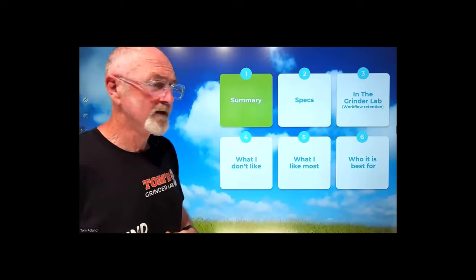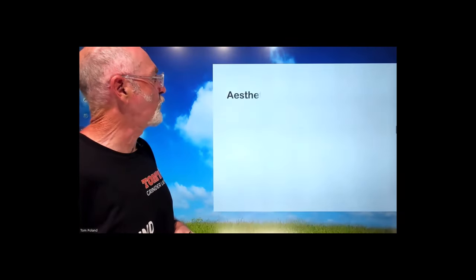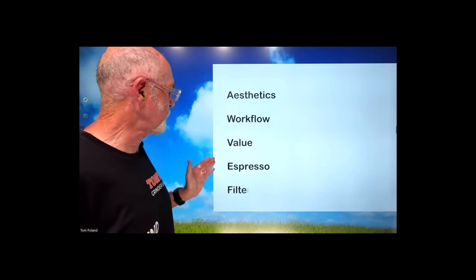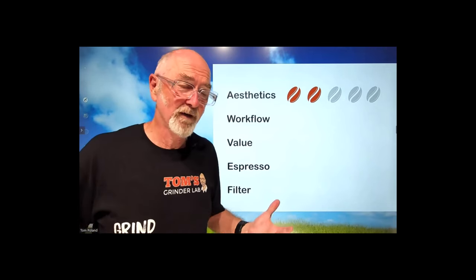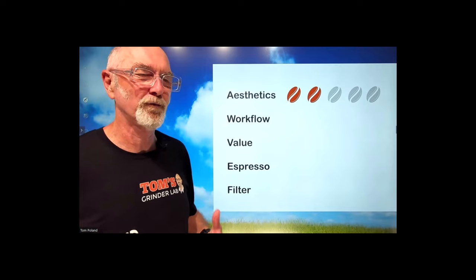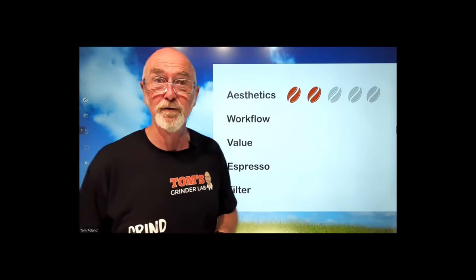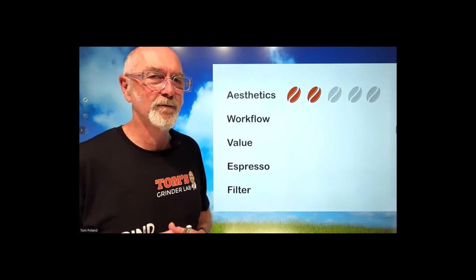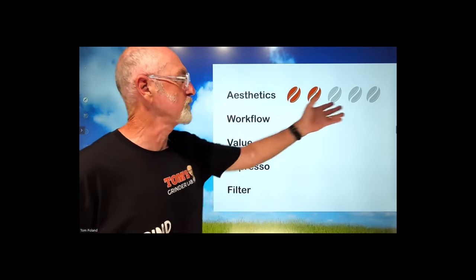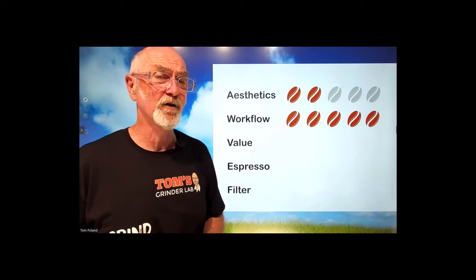Let's have a look at the summary. And I've shifted from awarding stars to awarding beans, because it's kind of more on the theme. So what I'm awarding those beans for are aesthetics, workflow, value, espresso, and filter. Now for aesthetics, I'm only going to give it two beans out of potential five, because beauty's in the eye of the beholder, I know, but it doesn't really do it for me. I love the look of an EG1. I love the look of the Varia VS3, the Varia Evo, and I quite like the look of the DF64V. But this is a bit chunkier than I thought it should have been. But hey, as I said, beauty's in the eye of the beholder. If you want to give it five beans, feel free, go ahead.